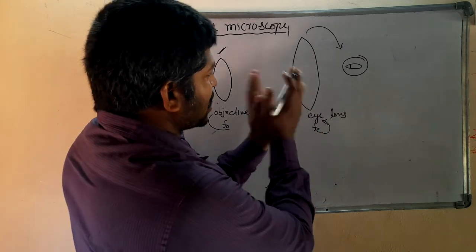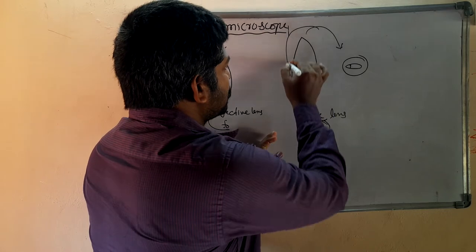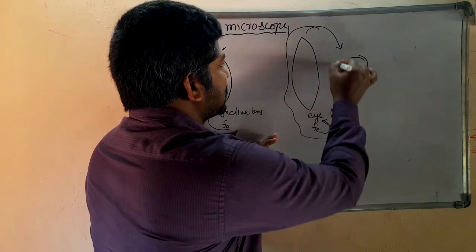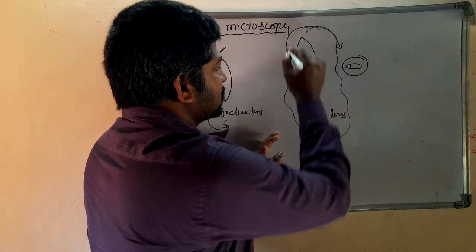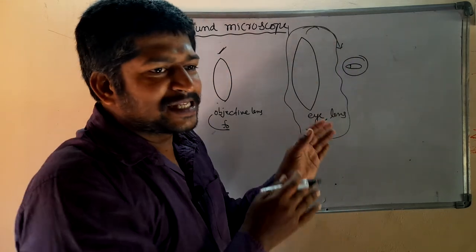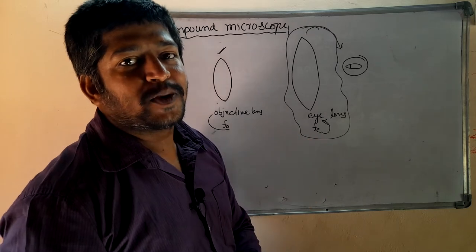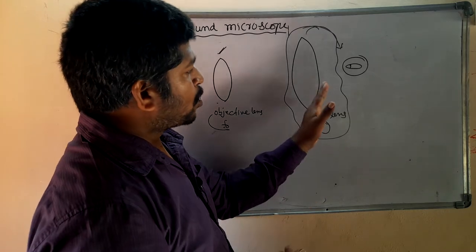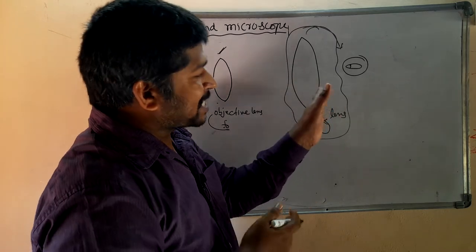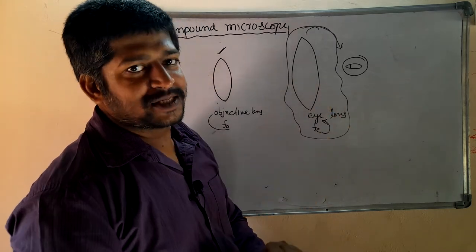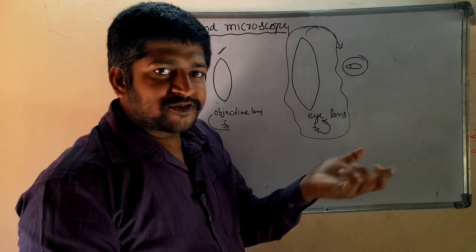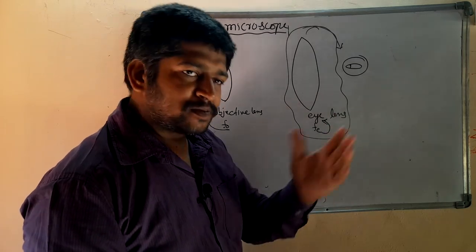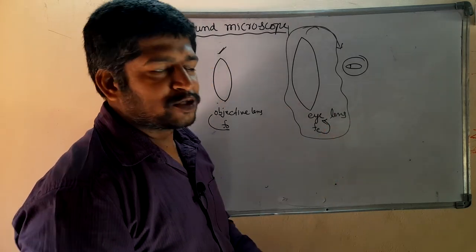Assume that the eye lens works similarly as a simple microscope. So there is no need to study about this lens separately — I will just take the formulas from the simple microscope as usual.